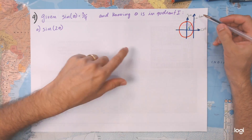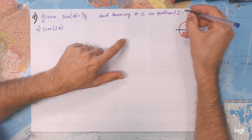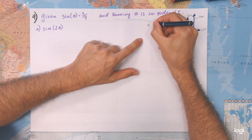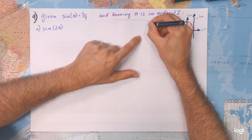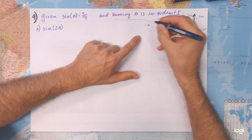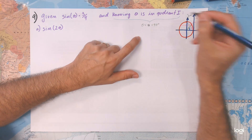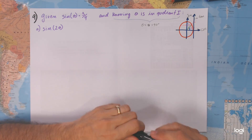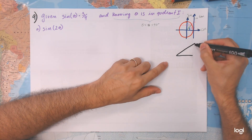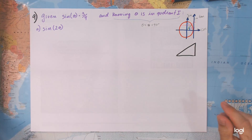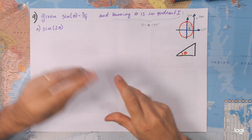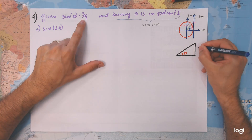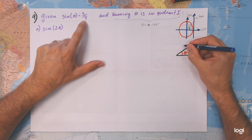Therefore, we know that theta must be bigger than zero and smaller than 90 degrees. Let's take the opportunity to draw the triangle, and with that, let's make it theta and put everybody here. The sine of theta is 3 fourths, so sine equals opposite over hypotenuse equals 3 fourths.